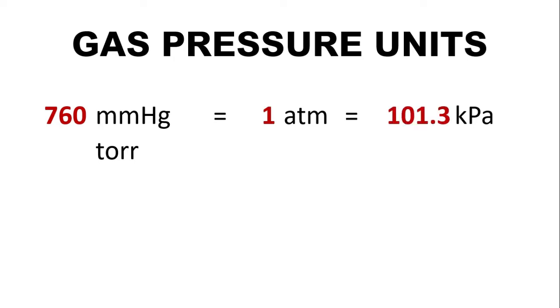In the previous videos, we've talked about the units of pressure. So we have mmHg and Torr. We also have Atmosphere and Kilopascal. We also said that these three are related. So 760 mmHg is equal to 1 Atmosphere and 1 Atmosphere is equal to 101.3 Kilopascal.